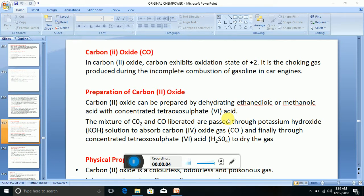Hello, welcome. Today we are continuing our lessons on carbons and its compounds. We are going to be looking at carbon (II) oxide (CO). In carbon (II) oxide, carbon exhibits an oxidation state of +2. It is a choking gas produced during the incomplete combustion of gasoline in car engines.